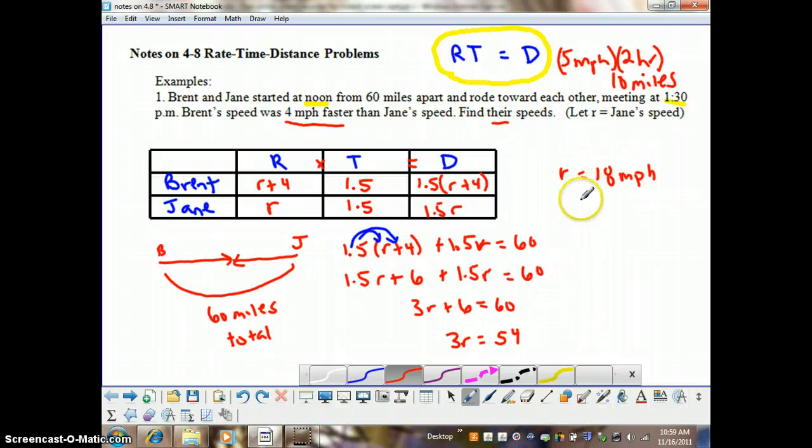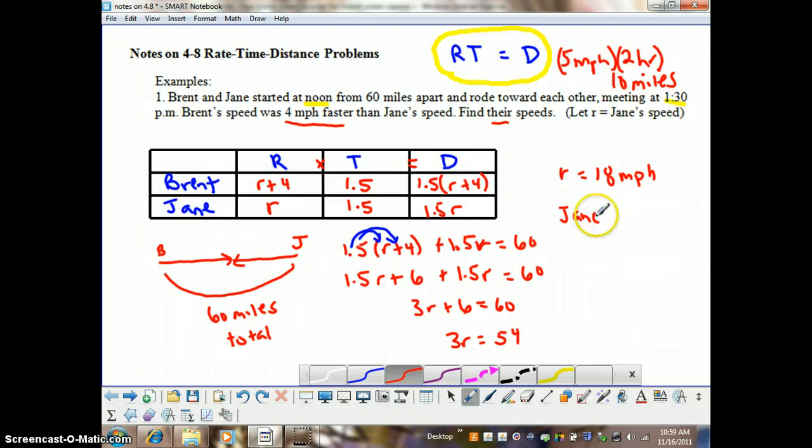So, this is Jane's speed. Jane's speed is 18 miles per hour. And Brent's speed was 4 miles per hour faster. So, Brent's speed is 22 miles per hour.